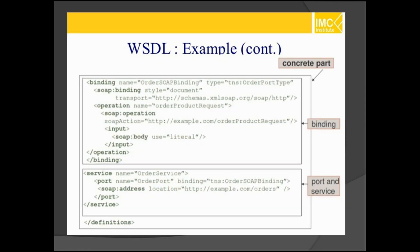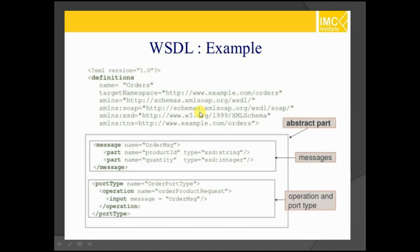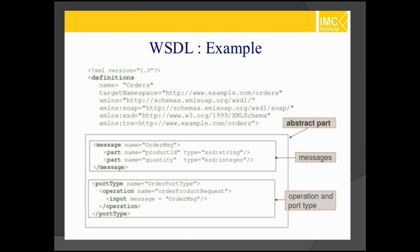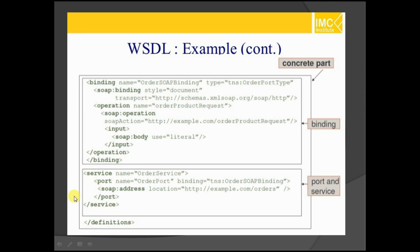You have to specify one more thing called order product request — the operation name you specified must be given here. It is linked with that. Then the service — ordering order service — you have to refer to the order port mentioned in the order message. The address where you want to specify a particular value will be something like example.com — for example, if you have Amazon, Flipkart, or Snapdeal, it will give you information simply.